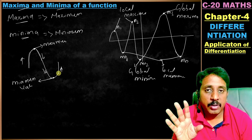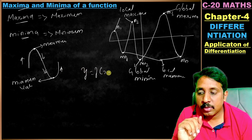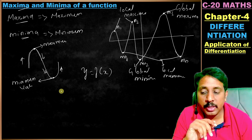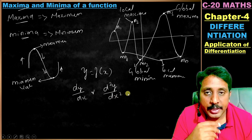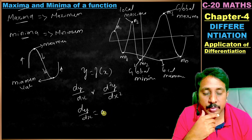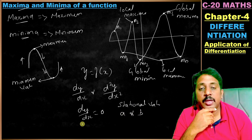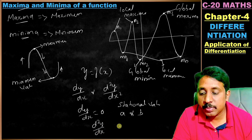So the procedure to find maximum and minimum: the function is named y = f(x). First, I need to find dy/dx and d²y/dx². Then I equate dy/dx = 0 to get the stationary constants a and b. Next, substitute a and b into d²y/dx².